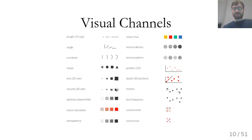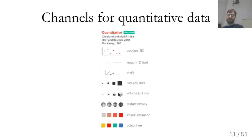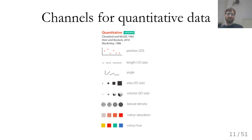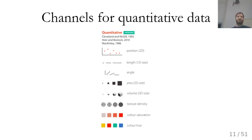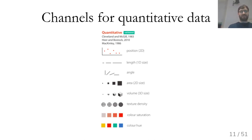One thing to keep in mind, particularly for quantitative data — meaning continuous data — there's a pretty clear hierarchy of these channels, and there have been several works studying how human perception works and what things work well. Position is by far the strongest cue; comparing the position of things is much easier than comparing anything else. The second is length, third is angle, and fourth is area.